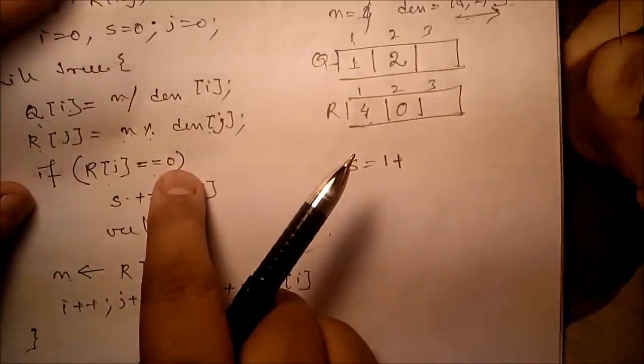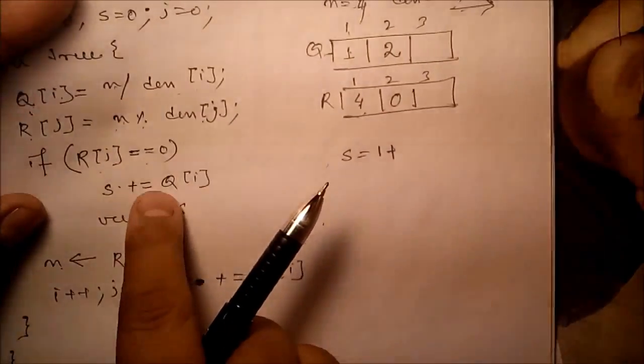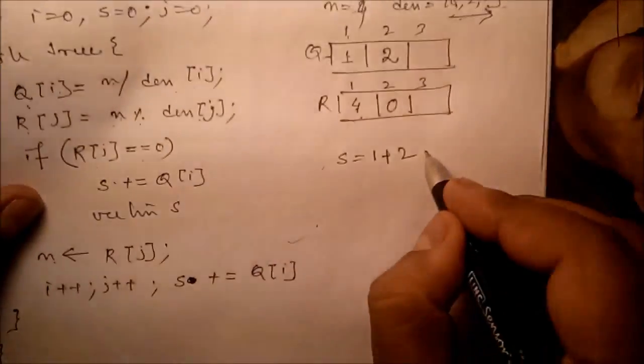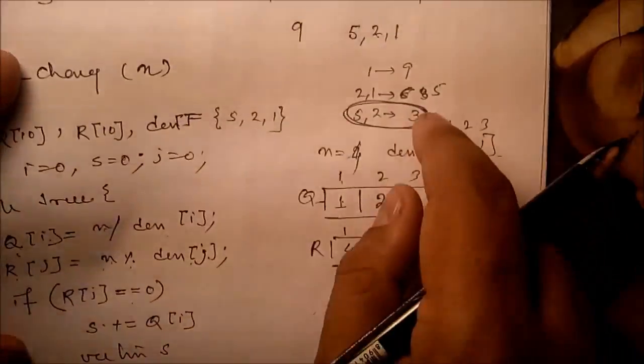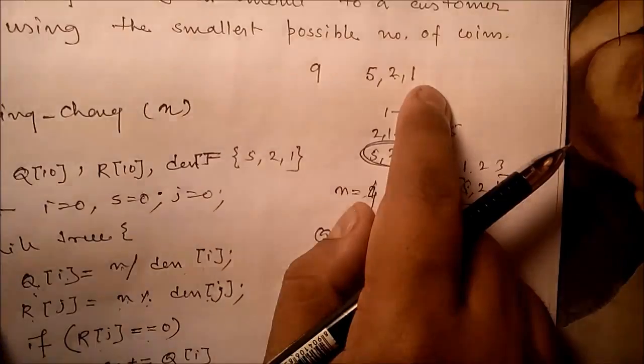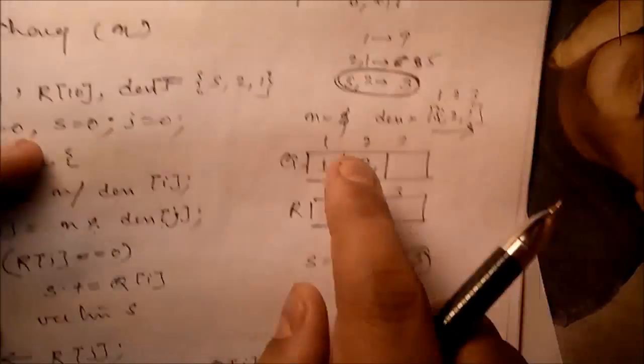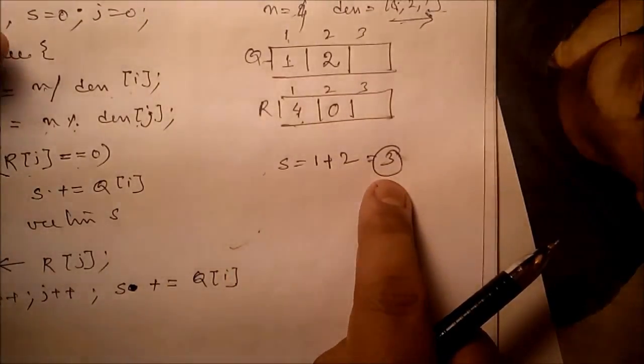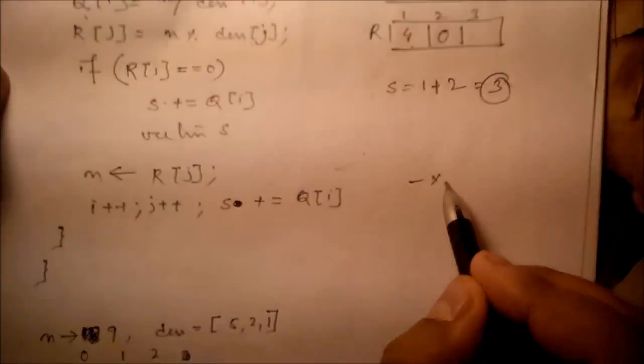R[j] equals 0, yes. S equals s plus q[i], which is 2. Return s, which is 3. That means to return 9 rupees with 5, 2, 1 rupee coins available, the minimum number of coins we have to return is 3. Thank you very much.